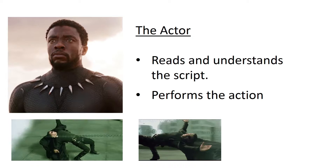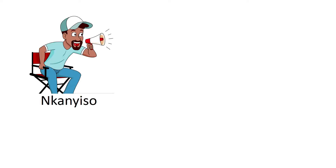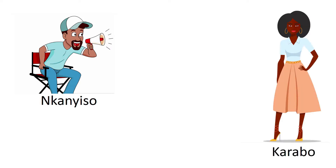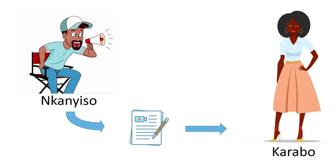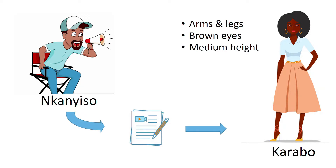Let's take a closer look at the actor and the script writer. Suppose we have a script writer called Nganyiso and an actor called Garabo. Nganyiso is a traditional guy and he writes the script on paper and gives it to Garabo. Although she is an actor, Garabo has unique features and abilities that will not change regardless of whatever role she plays. For example, Garabo has arms and legs, brown eyes, is medium height, has a dark skin tone, is athletic, and she knows and speaks two languages: Sesotho and English.